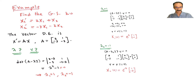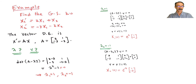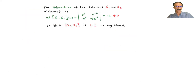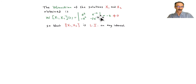Lambda one equals 1, giving v1 = [1, -1]. Lambda two equals -1, giving v2. To verify these two solutions are independent, we use the Wronskian. Here v1 and v2 are column vectors — no derivatives needed. The Wronskian equals -2, which is never zero, so x1 and x2 are linearly independent on any interval.